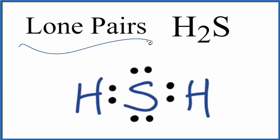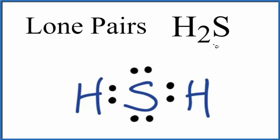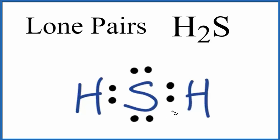Let's take a look at the lone pairs for H2S — hydrogen sulfide. The first thing we need to do when we look at lone pairs is have a valid Lewis structure. This is the Lewis structure for H2S. If you need help with that, there's a link at the end of the video and in the description.